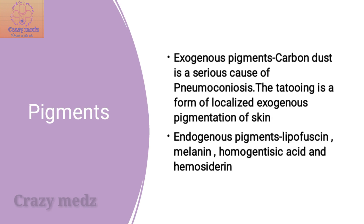The endogenous pigments include lipofuscin, a yellow-brown pigment most commonly seen in severe malnutrition and cancer patients. Melanin is a brown-black pigment. Homogentisic acid occurs in patients with alkaptonuria, a rare metabolic disease, and the accumulation of these pigments is known as ochronosis.